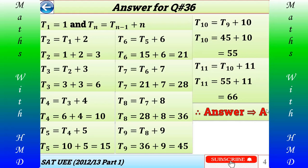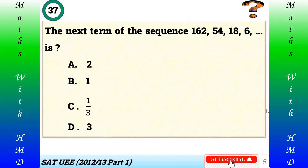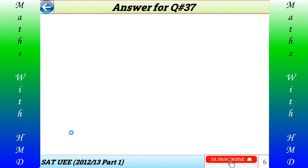Question number 37: The next term of the sequence 162, 54, 18, 6 is: A) 2, B) 1, C) 1/3, D) 3. As usual, please try by yourself and check your answer with my answer.